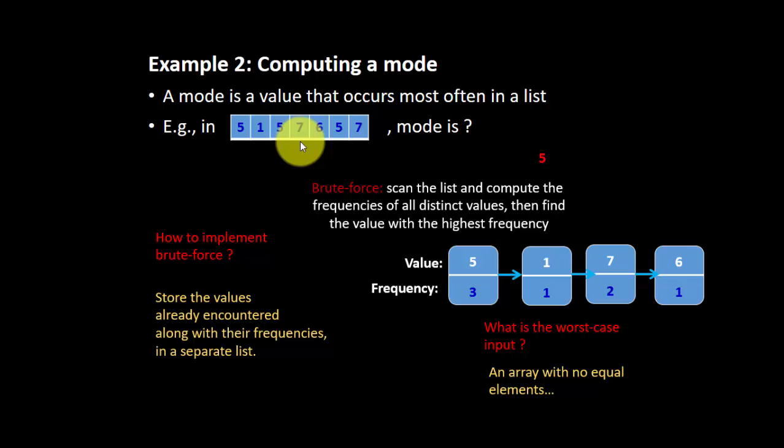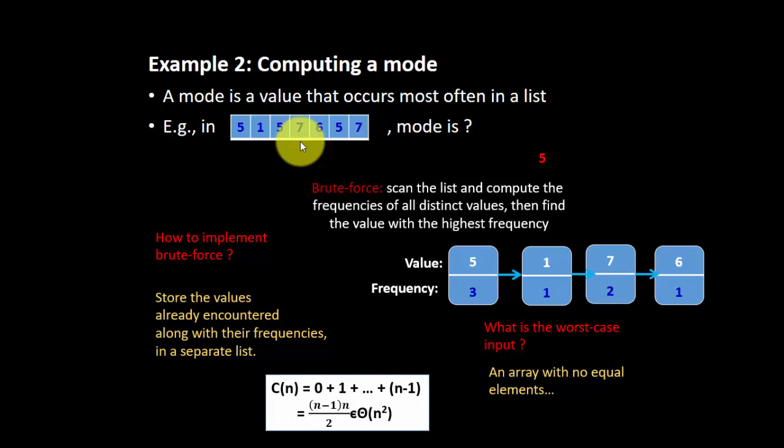So, what is the worst input, what is the worst case scenario? That means all elements are unique. So the frequency list will be 1, 1, 1, 1, 1. So, by using a brute force, we have to do two looping in a loop. So, we have N squared.